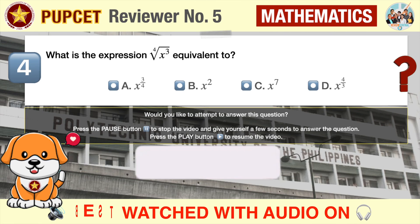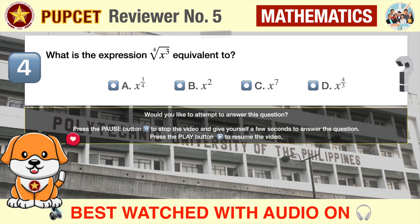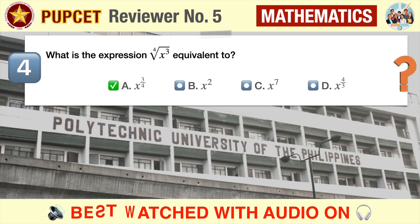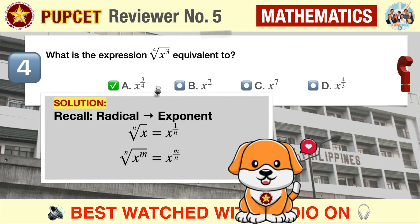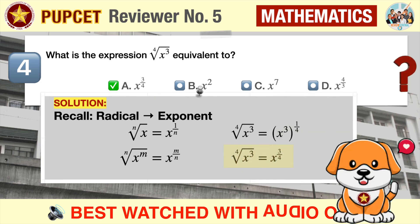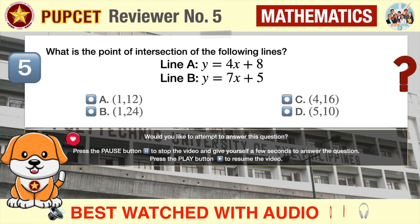Question number four: what is the expression 'fourth root of x cubed' equivalent to? A) x raised to three-fourths, B) x squared, C) x raised to seven, D) x raised to four over three. The correct answer is A, x raised to three-fourths. Recall the rules for converting radicals to exponents: the nth root of x raised to m can be expressed as x raised to m over n. Therefore, the fourth root of x cubed equals x raised to three over four.